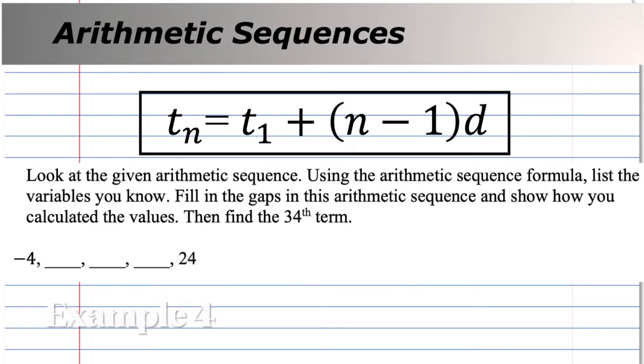Look at the given arithmetic sequence. Using the arithmetic sequence formula, list the variables you know, fill in the gaps in this arithmetic sequence, and show how you calculated the values. Then find the 34th term. Wow, you've got a lot to do here. Don't panic. Just start listing the stuff you know. Do you know the first term? Yes. Negative 4.